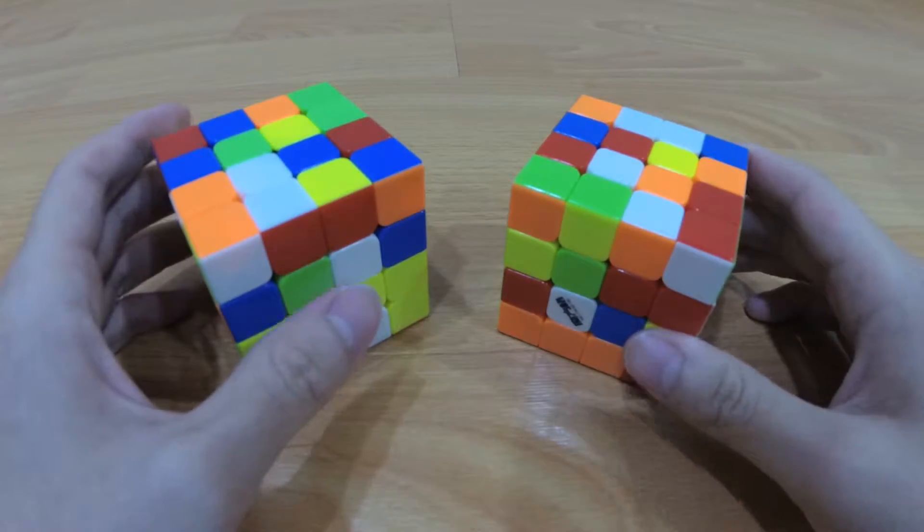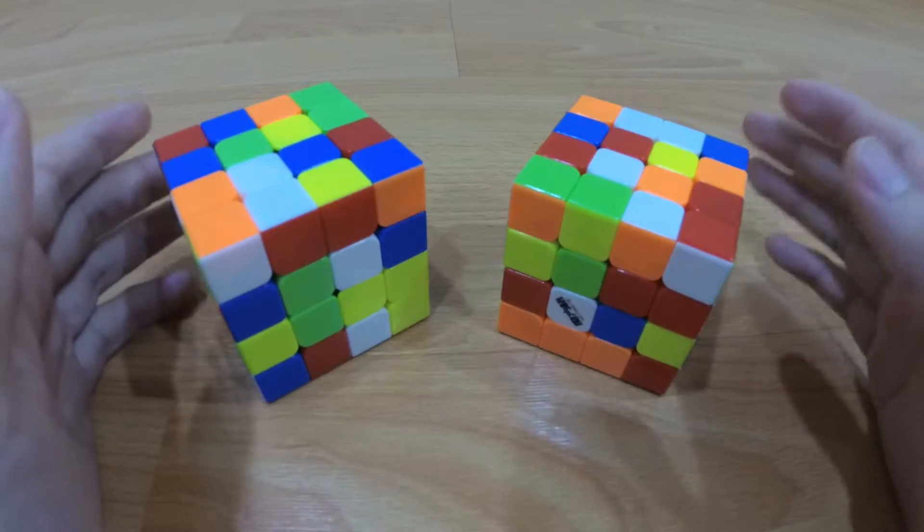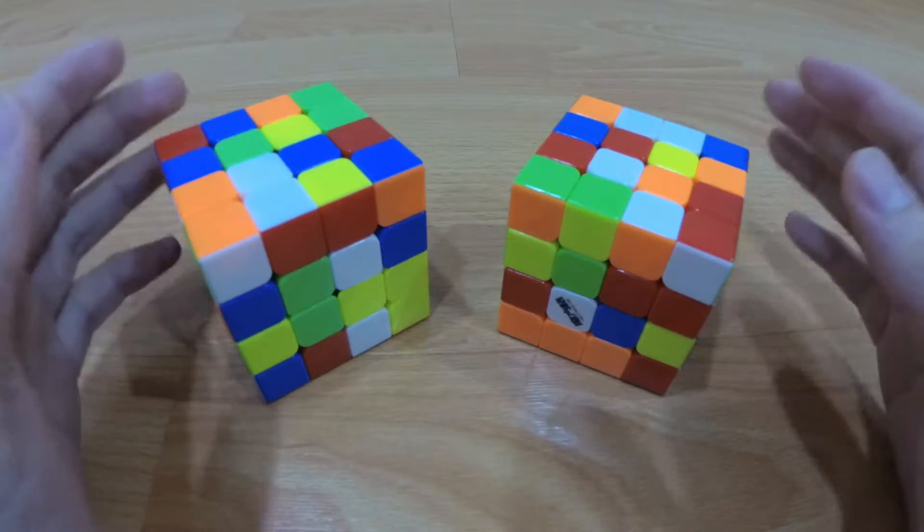First two centers. You should be able to track your first two centers during inspection and also finish it in under 5 seconds or less.